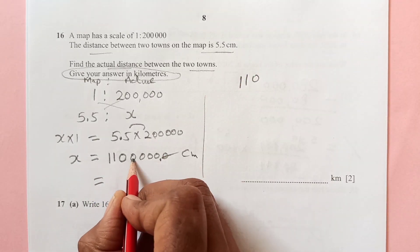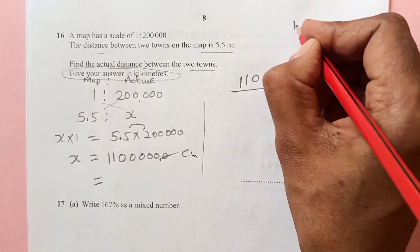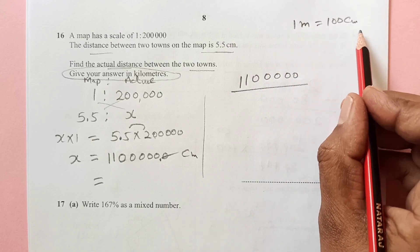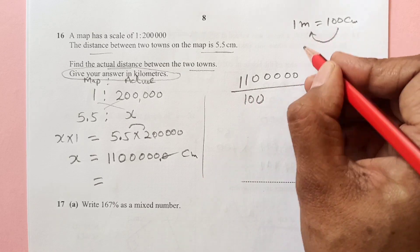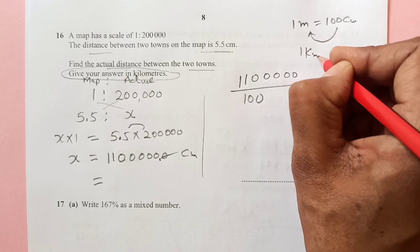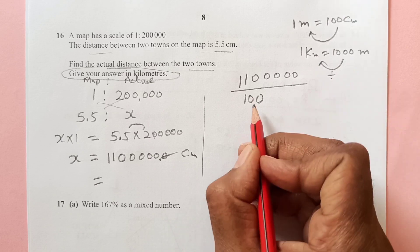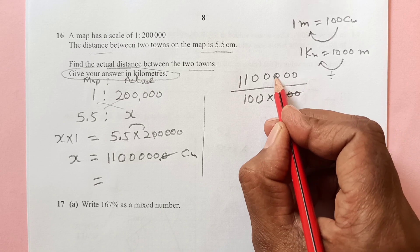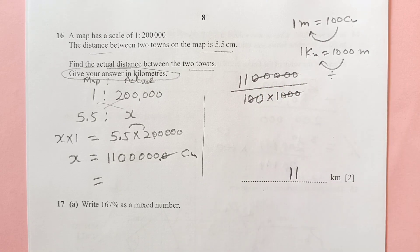1 meter is equal to 100 centimeters. From centimeter to meter you need to divide it by 100. Then from 1 kilometer is equal to 1000 meters, so now you need to divide by 1000. So 3 zeros gone, 2 zeros gone. We are left with 11. So 11 kilometers.